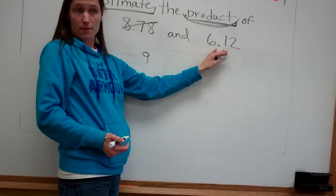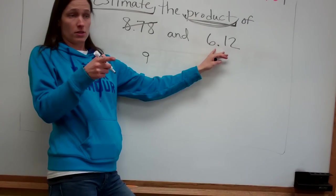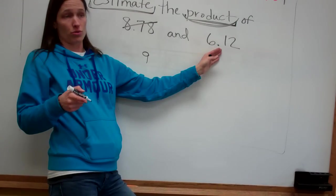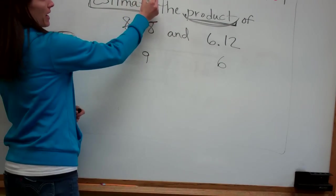Okay. Now let's do 6.12. What two numbers is it in between? 6 and 7. Okay. So which one's it closer to? 6. 6. So we're going to change this too. So now it says, estimate, which we already did, find the product of 9 and 6.